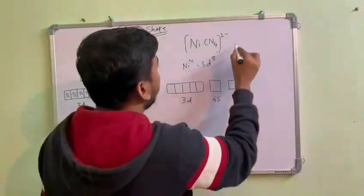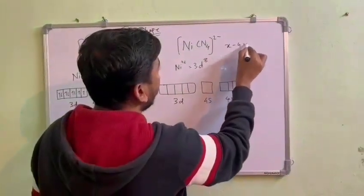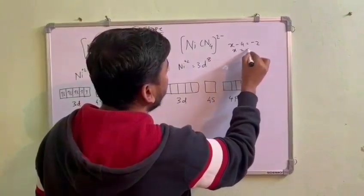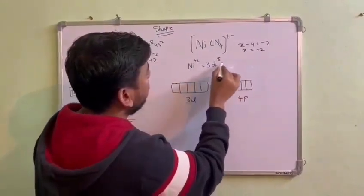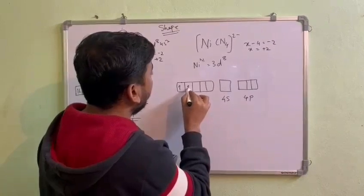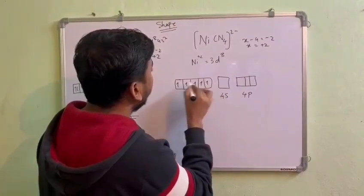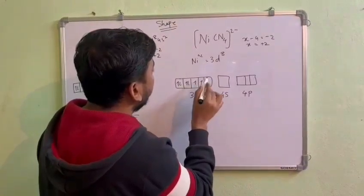But in this case, the same thing will happen: x minus four equals minus two, x equals plus two. That means nickel plus two is 3d^8. Here what will happen: one, two, three, four, five, six, seven, then eight, but this electron will jump from here.